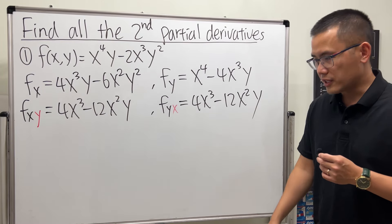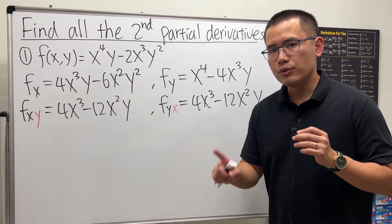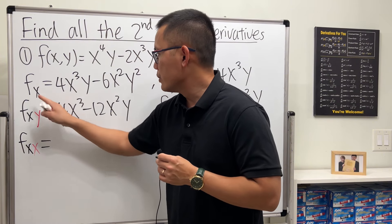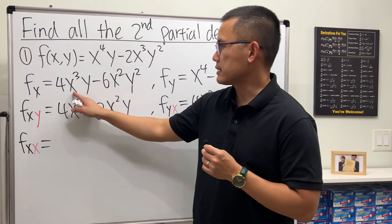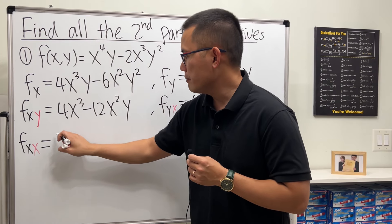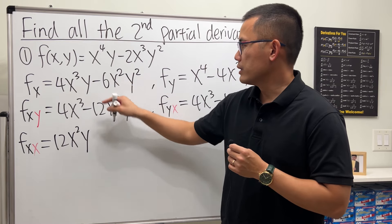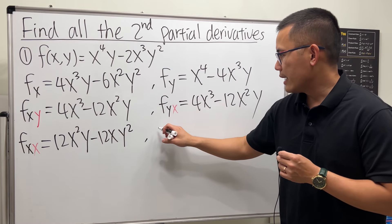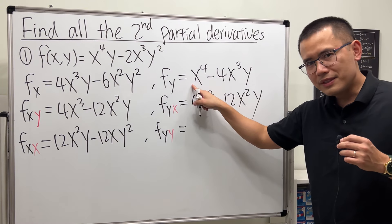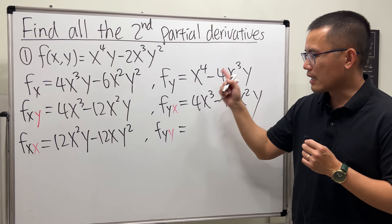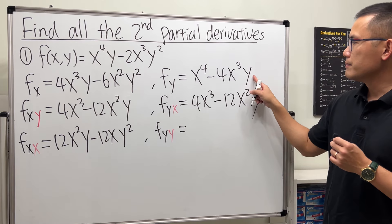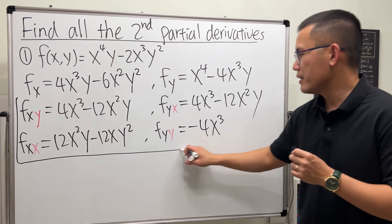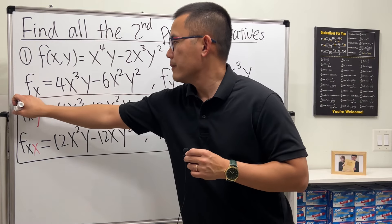Now we have to do fxx and fyy. For fxx, look at fx and differentiate with respect to x: put the three to the front to get 12x squared y, and the second term gives minus 12x times y squared. For fyy, the derivative of x to the fourth power with respect to y is zero since x is constant, and for the second term we get minus 4x cubed. Those are all the second partial derivatives.